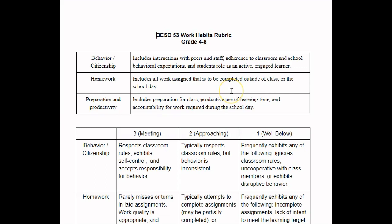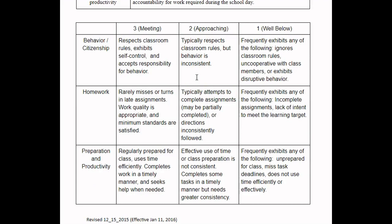Down in the lower level you have the narratives or the performance descriptors for the three areas, for the three levels of 3, 2, and 1. If you notice, there is not an exceeds category that we have in the achievement side. So it's simply 1, 2, 3, with the thought that these are behaviors that we expect everybody to perform regularly, and we didn't want to spend a lot of time trying to determine the difference between a 3 and a 4.